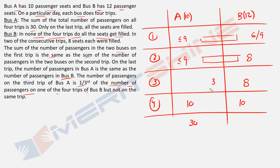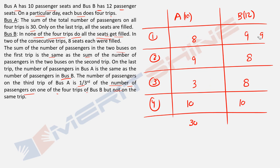So X = 3 is the only option. Bus A Trip 3 = 3, and Bus B Trip 1 = 3X = 9. With 20 − 3 = 17 left for Bus A Trips 1 and 2, and the equal-sum constraint with Bus B Trip 2 = 8, the only valid split is Bus A Trip 1 = 8 and Bus A Trip 2 = 9. This is the final table.